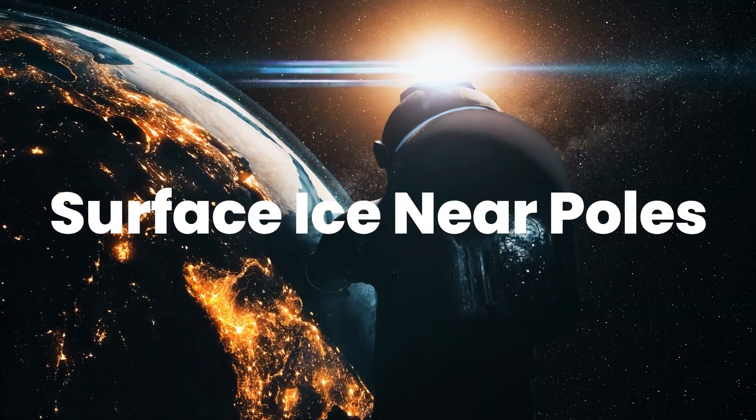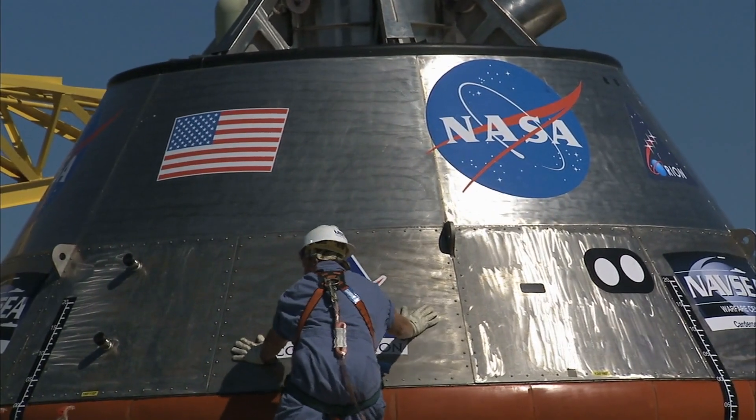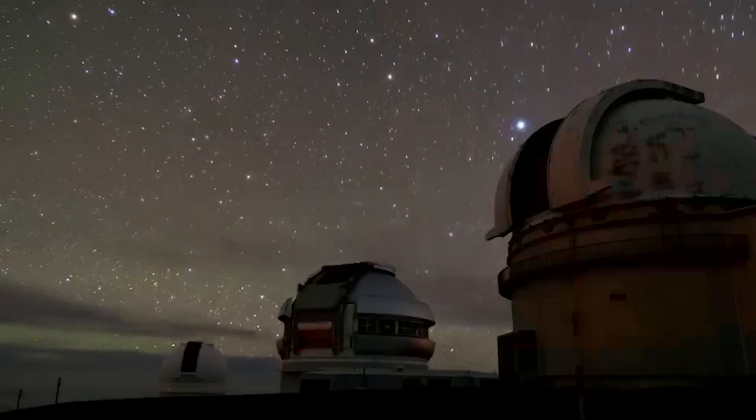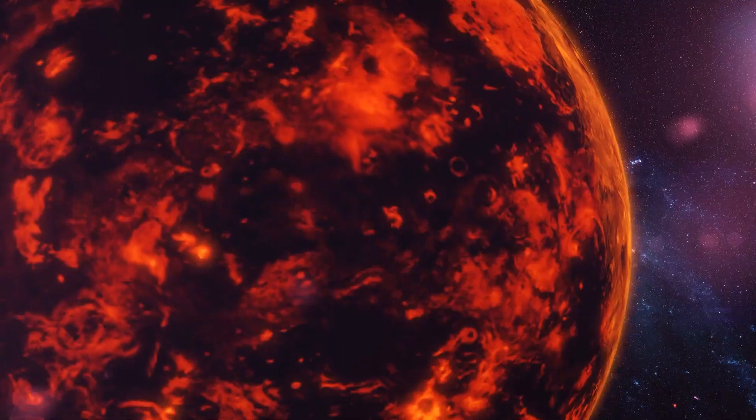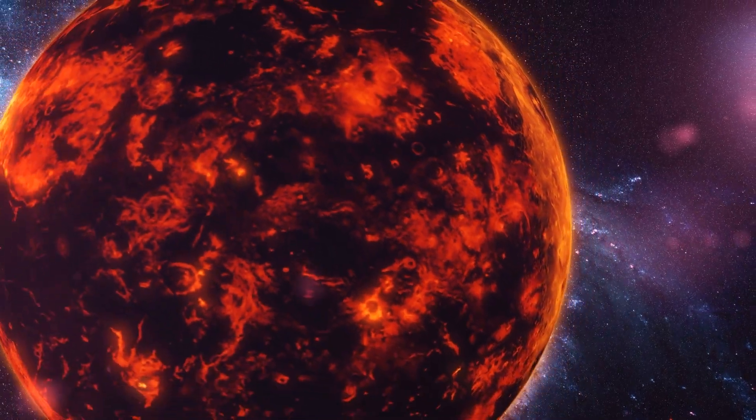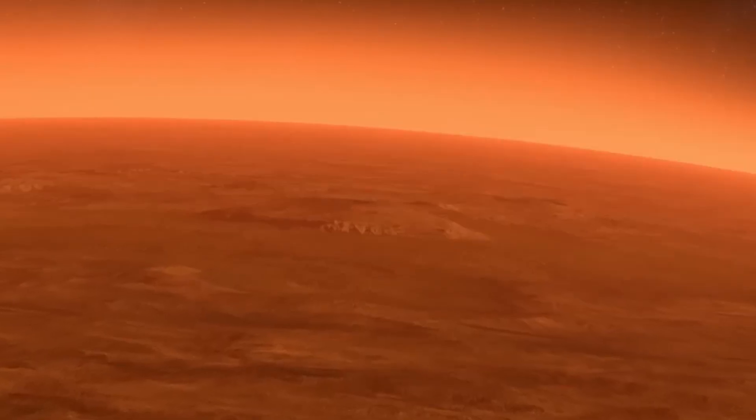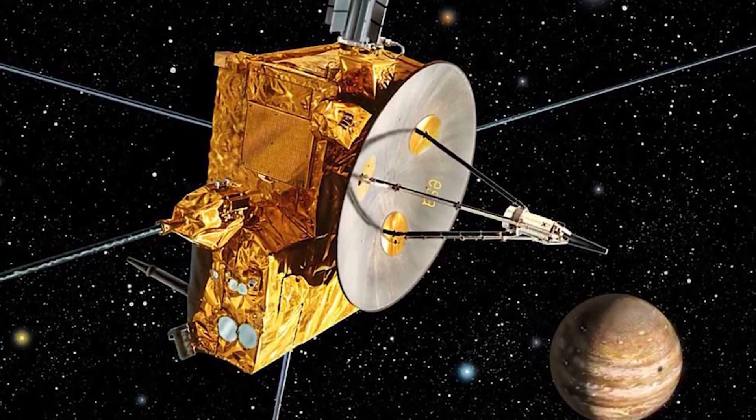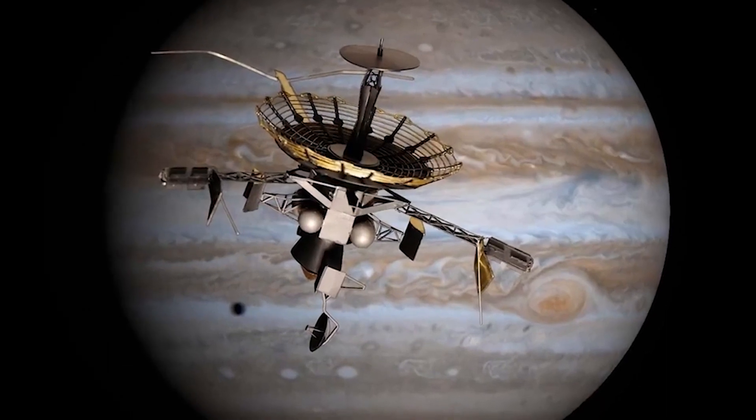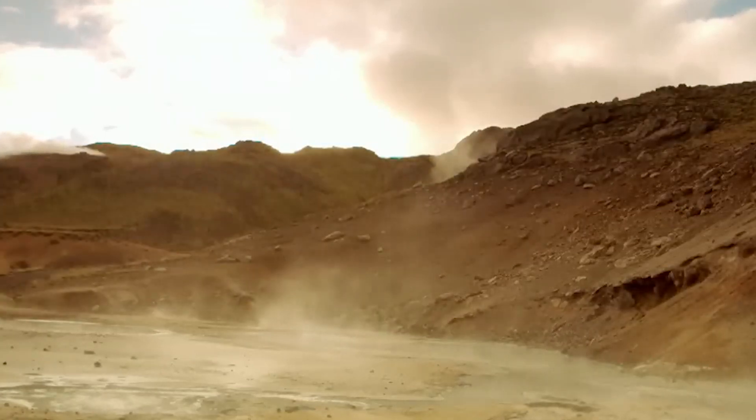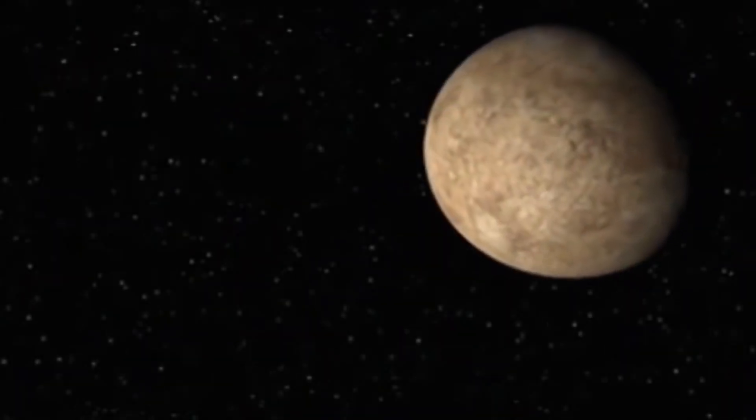Surface ice near poles. In 2012, NASA's Messenger spacecraft made a groundbreaking discovery when it found water ice within the confines of certain craters on Mercury's surface. This revelation marked a significant moment in our understanding of the planet closest to the sun. In 2017, further research confirmed that Mercury possesses a substantial amount of ice, particularly in its north polar region, far more than previously anticipated.